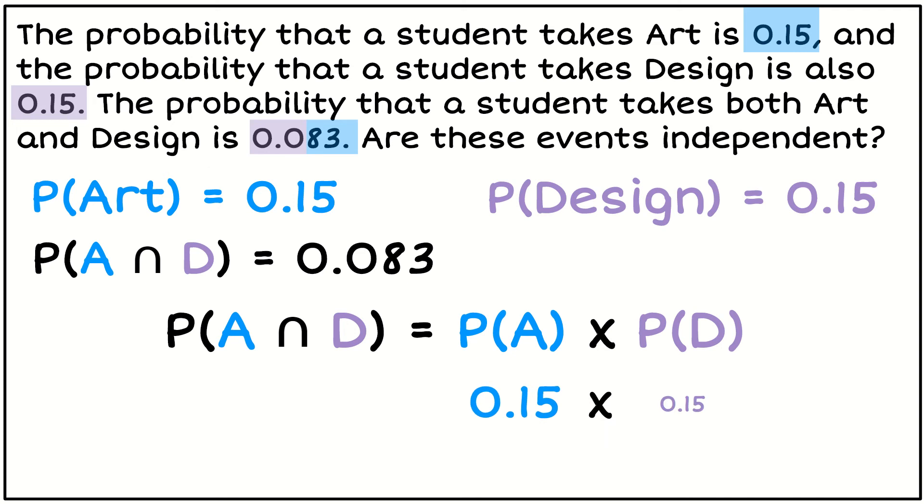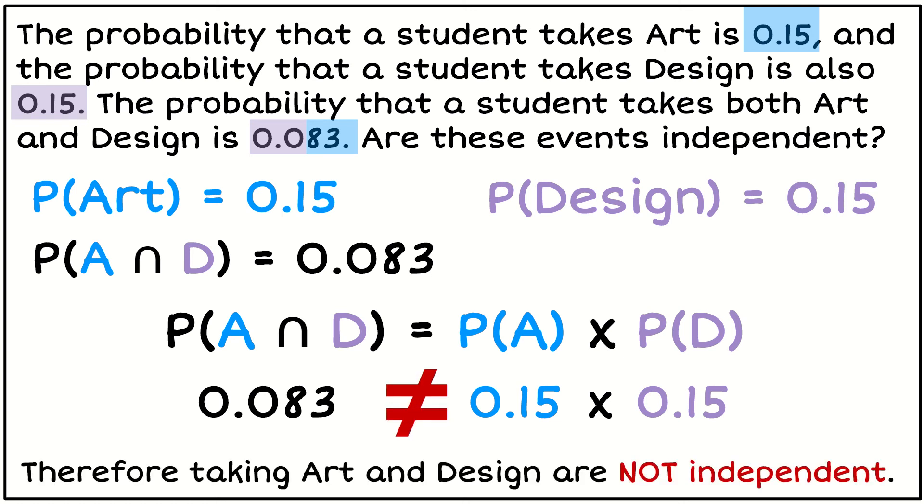So probability of A is 0.15, probability of D is 0.15, and the probability of A intersection D is 0.083. So I now need to check: does 0.15 times 0.15 equal 0.083? And the answer is no, it's not. So because that is not equal, that means that these events are not independent. So the chance that somebody takes art compared to somebody taking design, they aren't independent. So somebody might be more or less likely to take both subjects if they take one.